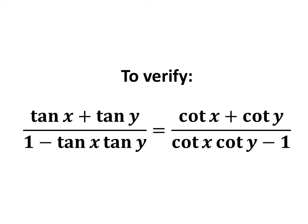In this video, we will learn to verify the trigonometric identity: tangent of x plus tangent of y, upon 1 minus tangent of x times tangent of y, is equal to cotangent of x plus cotangent of y, upon cotangent of x times cotangent of y minus 1.